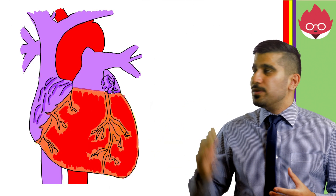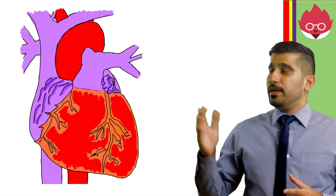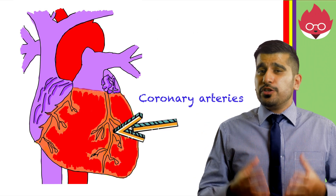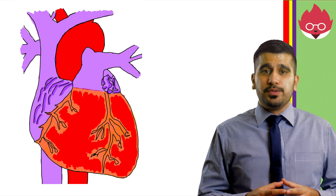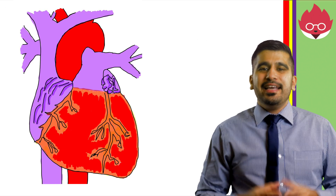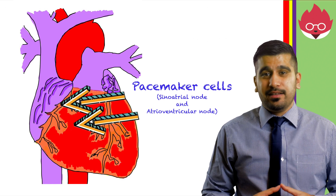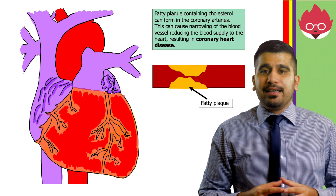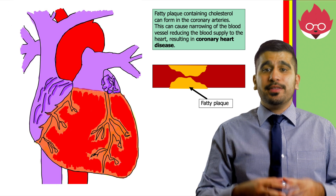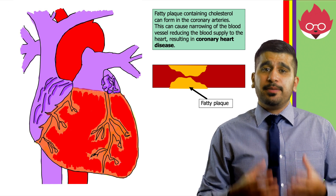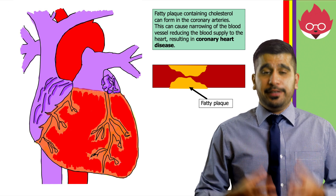Now let's take a look at the outside of the heart. Here you can see some vital blood vessels called the coronary arteries. These arteries supply oxygen-rich blood to the heart muscles. The natural resting heart rate is controlled by a group of cells in the right atrium known as the pacemaker cells. An electrical signal is generated which spreads across the heart causing it to beat. Fatty plaque containing cholesterol can form in the coronary arteries, causing the narrowing of blood vessels, reducing the blood supply to the heart, resulting in coronary heart disease.